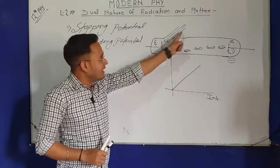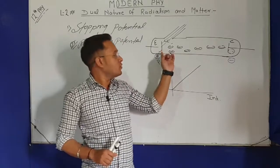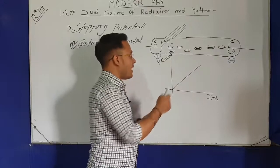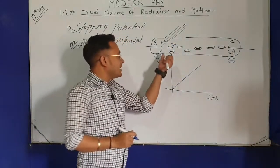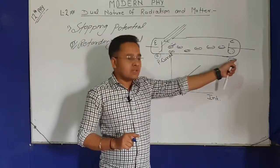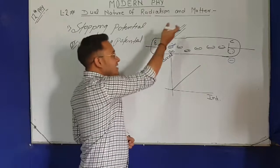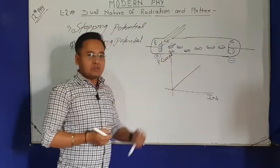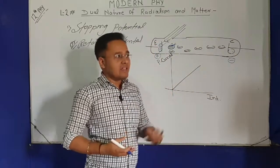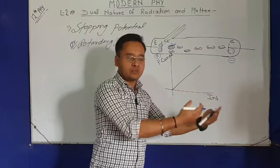Now consider what happens: an electron comes out of the emitter. In the original experiment, the electron moved from low potential to high potential toward the positive plate. But now, after emission, the electron must decide which way to go. Since the collector plate is at negative potential, the electron will face repulsion from that side. However, because the electron received energy from the radiation, it can still move forward despite the repulsion — just like if someone pushes you but you have enough energy to keep moving forward a little.